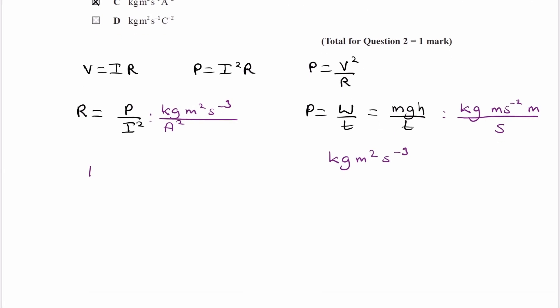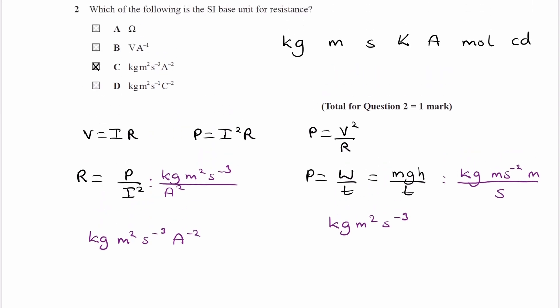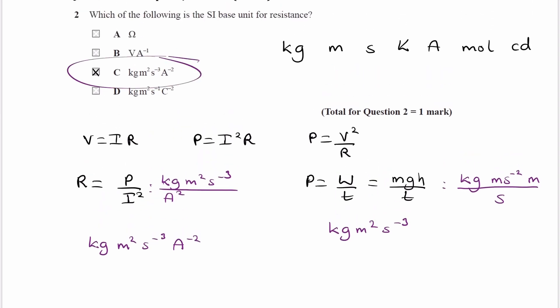So our final unit will then be kilograms, meters squared, S to the minus 3, A to the minus 2. And that is what we have in our answer, part C.